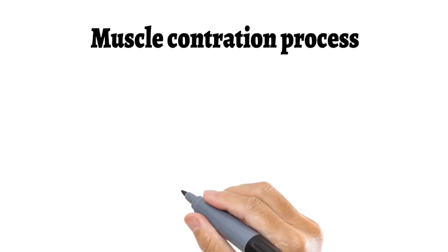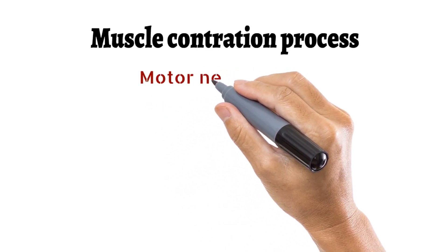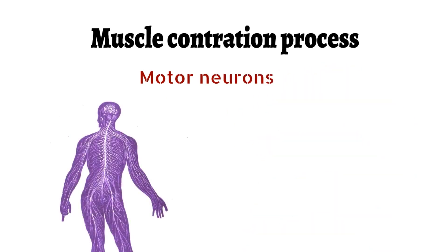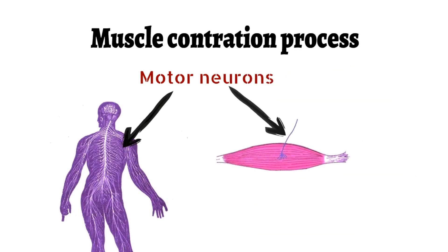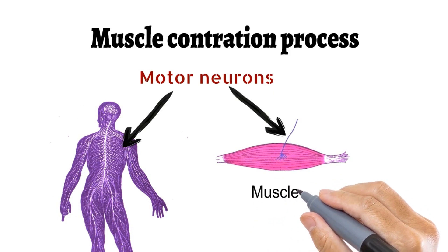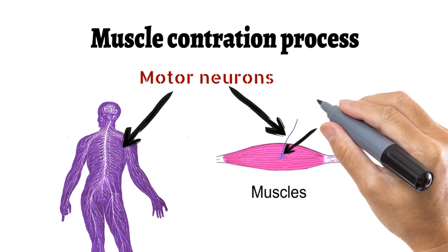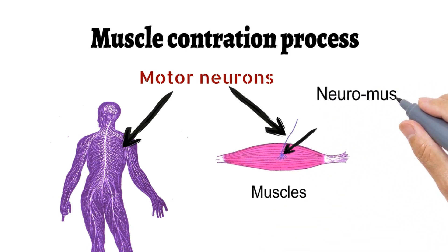First, let us see how normal muscle contraction occurs, which is essential for our day-to-day activities. Motor neurons sense the signal for muscle contraction. These motor neurons are distributed all over the body, making contact with muscles present in various parts of the body. The contact point of a motor neuron and muscle is called the neuromuscular junction.